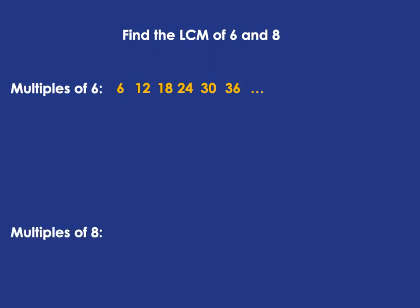Then you start writing down the multiples of 8, and you're looking for something that appears in both lists. You stop as soon as you see a multiple of 8 that's already in your list for the multiples of 6. You write down 8, 16, and suddenly you see 24 is already in that list. So the lowest common multiple of 6 and 8 is 24.